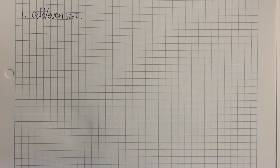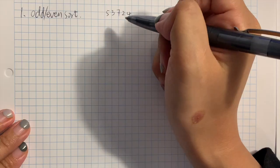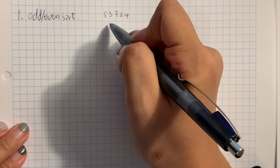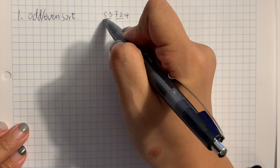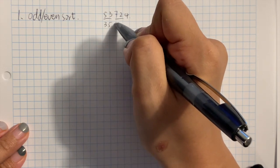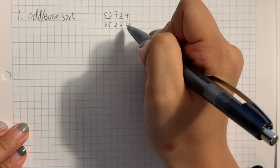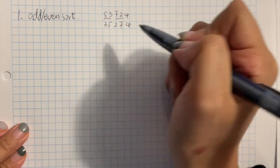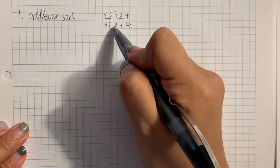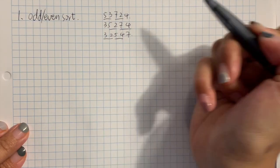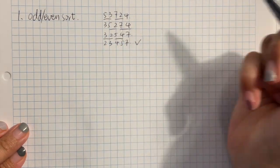Odd-even sort is like a parallel bubble sort. I will demonstrate using an example. In the first round, we will look at all the odd position numbers. Five is greater than three, then we swap their positions. And this also gets swapped. And four, just leave it there. And then in the next iteration, we look at the even position numbers. And again, in the next iteration, odd position numbers, and then we're done.